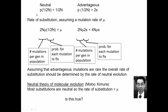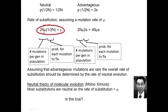Now let's think about the rate of substitution — how often a population goes from one wild-type allele to the next over time. Assuming a per-locus mutation rate of mu, in the neutral case, there are 2N·mu mutations per generation, each with a fixation probability of 1/2N. The 2N's cancel and you get mu. So the rate at which a population acquires new alleles at a locus equals the mutation rate per individual at that locus.